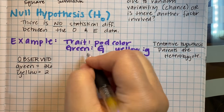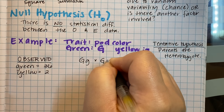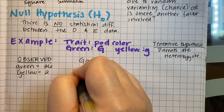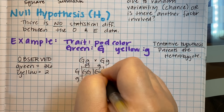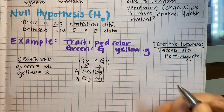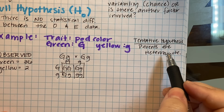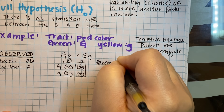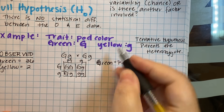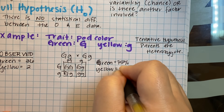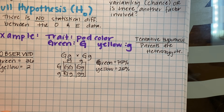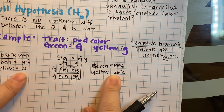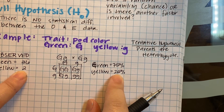If the parents were heterozygous, we would expect 75% of them to be green — three out of four — and 25% of them to be yellow. It's best to work in percents when figuring out your expected data. Now we need to convert these to the same values, because these are percents and these are whole numbers. You want everything in whole numbers — number of individuals. So we take the total number in our population: 36 plus 2 equals 38.